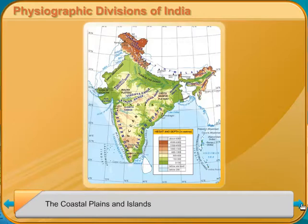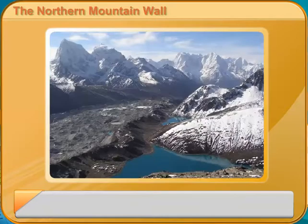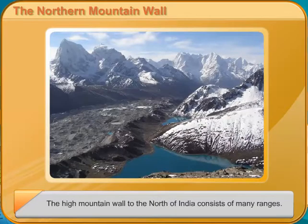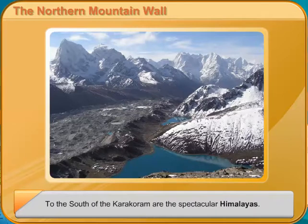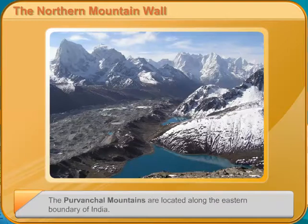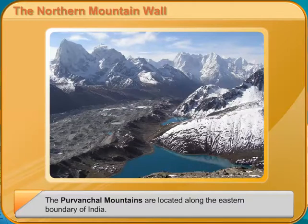The Northern Mountain Wall. The high mountain wall to the north of India consists of many ranges. In Kashmir are the Karakoram Mountains. To the south of the Karakoram are the spectacular Himalayas. The Purvachal Mountains are located along the eastern boundary of India.